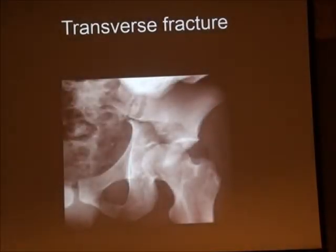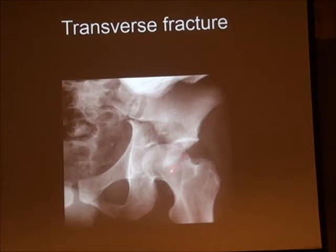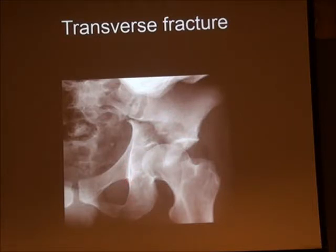Here is an example of a transtectal transverse fracture. The posterior wall is disrupted, the anterior wall is disrupted, and the iliopectineal line is disrupted. The relationship between the teardrop and the ilio-ischial line is maintained. The dome, or the majority of it, is where it should be, while the rest has moved.